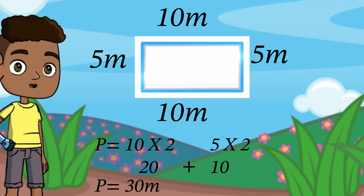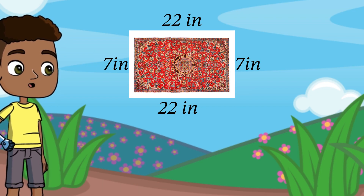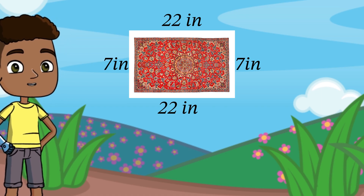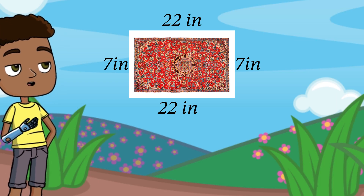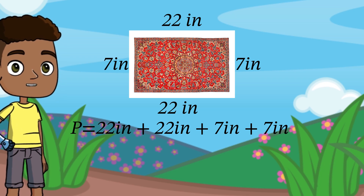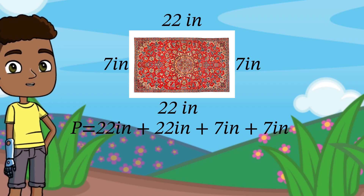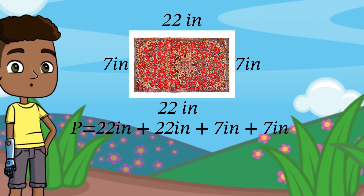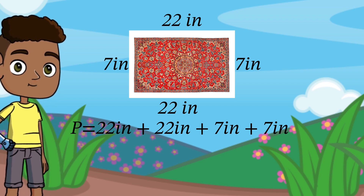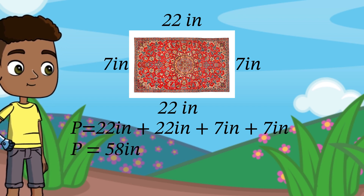Let's find the perimeter of this road. A reminder: perimeter is the distance around, and we can find the perimeter by adding. We are going to add 22 inches plus 22 inches plus 7 inches plus 7 inches. 22 plus 22 is equal to 44, plus 7 is 51, plus 7 is 58. The perimeter is 58 inches.